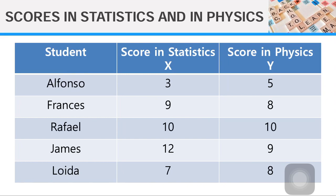We have the name of the students, the score in statistics, and the score in physics. The score in stats is our X, while the score in physics is our Y. Now, the question is, how to compute the Pearson product moment correlation, or we simply call it the Pearson R.